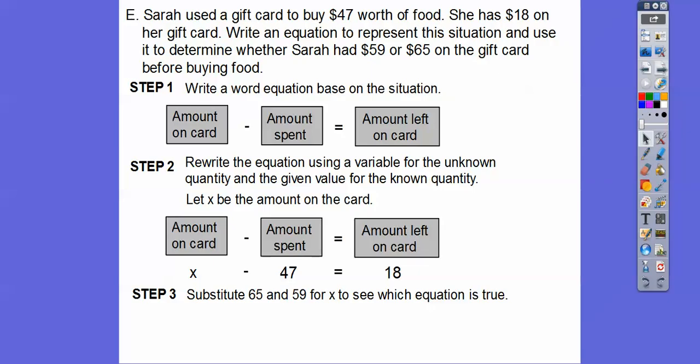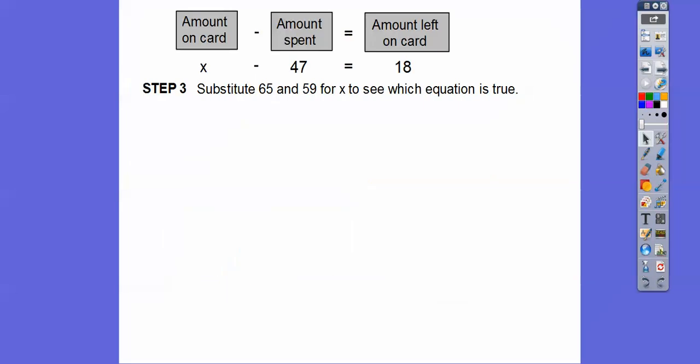Now what we're going to do is substitute in. Did she have $65 or $59 for X to see which equation is true? Because up here, I don't know why I wrote it 65 first and 59 second because up here we have 59 first and 65 second. But I did, so I'm going to solve it this way. So I put in 65 right here, put in 59 right here, and see which one gives us $18.